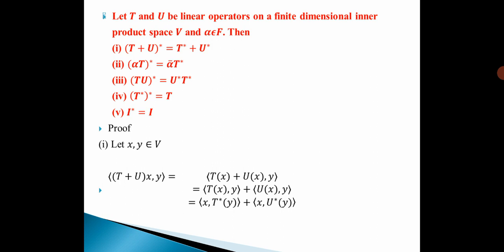Let us see the proof. First, let x, y belong to V. Therefore, the inner product of (T+U)(x), y equals the inner product of T(x) + U(x), y. In the first step, you multiply with x which is outside the bracket, giving us the inner product of T(x) + U(x), y. Then in the next step, we split it into two terms: the inner product of T(x), y plus the inner product of U(x), y.